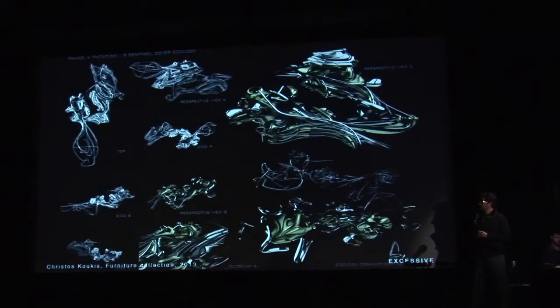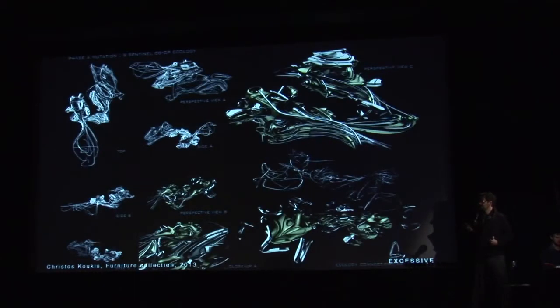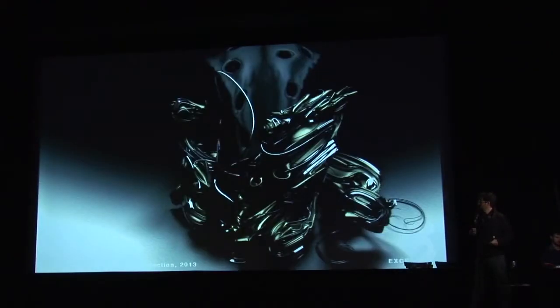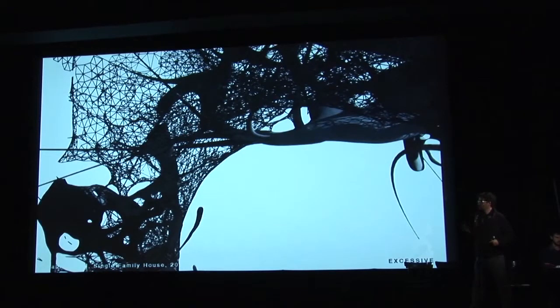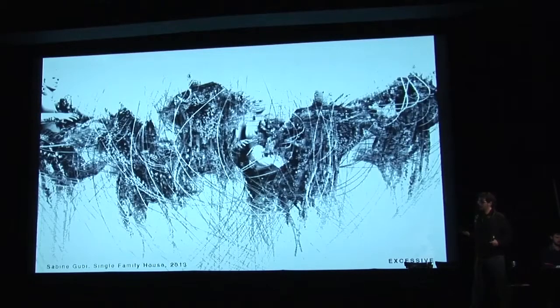So the only rule that we gave them is that if they were analyzing the structure of one of these canonic houses, what they have to produce is not the same field of geometry. So if they were analyzing the structure, they need to produce skin, and vice versa.